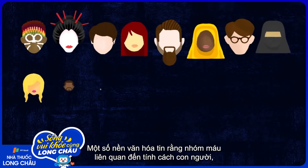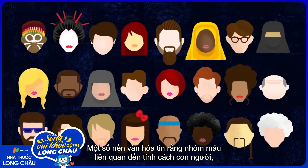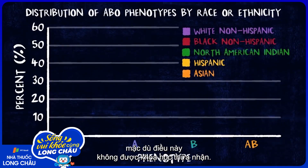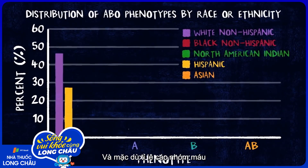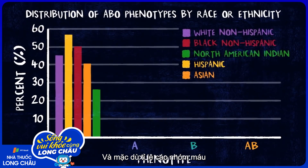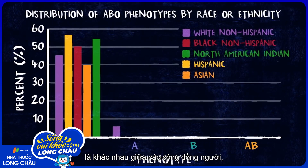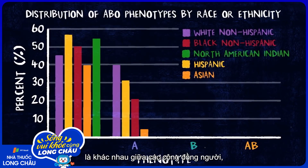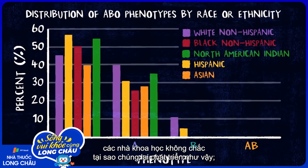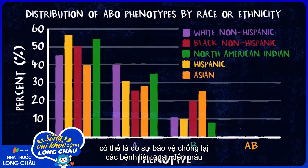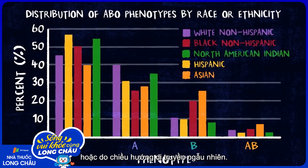Some cultures believe blood type to be associated with personality, though this is not supported by science. And though the proportions of different blood types vary between human populations, scientists aren't sure why they evolved — perhaps as protection against bloodborne diseases, or due to random genetic drift.